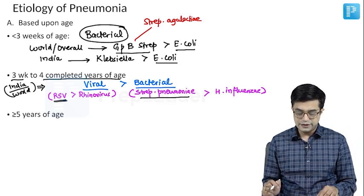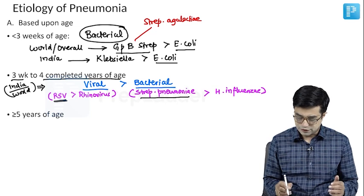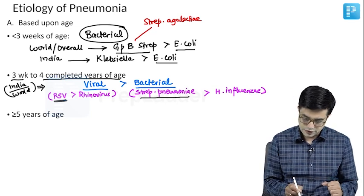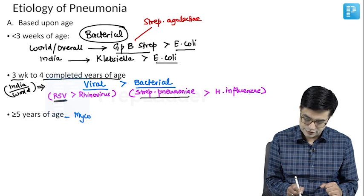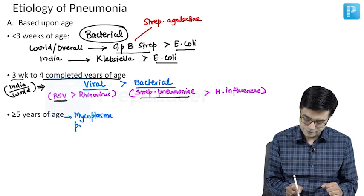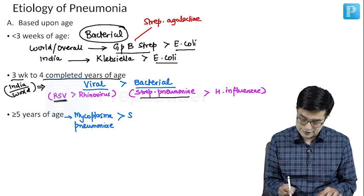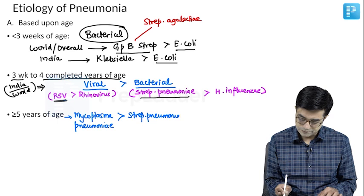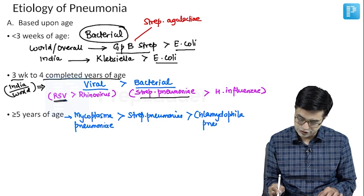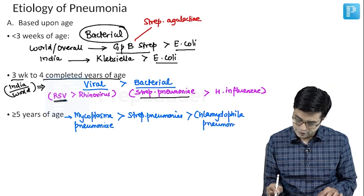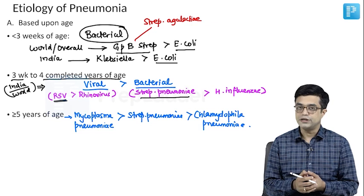The third category is five years and above. In this age group, the most common cause — irrespective of world or India — is Mycoplasma pneumoniae. The second most common is Streptococcus pneumoniae, followed by Chlamydophila pneumoniae, a member of the Chlamydia family. These are the top three causes in older children and the adolescent age group.